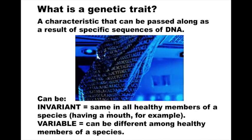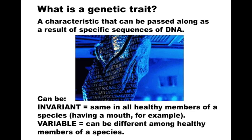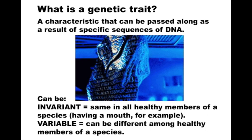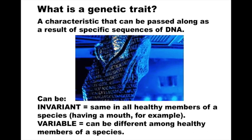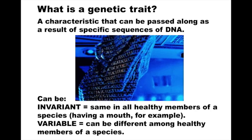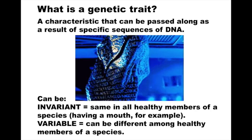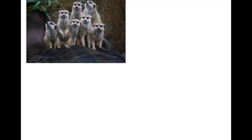An invariant trait means all healthy members of the species would have a mouth. Can a baby be born without a mouth? It's possible, but it's not likely, and that would not be a healthy person. We also have variable things that can be different among healthy members of a species. These are meerkats — they live in Africa. All of these meerkats have the invariant traits: they all have two eyes, one mouth, one nose with two nostrils, ears, and four limbs. Those are invariant traits.